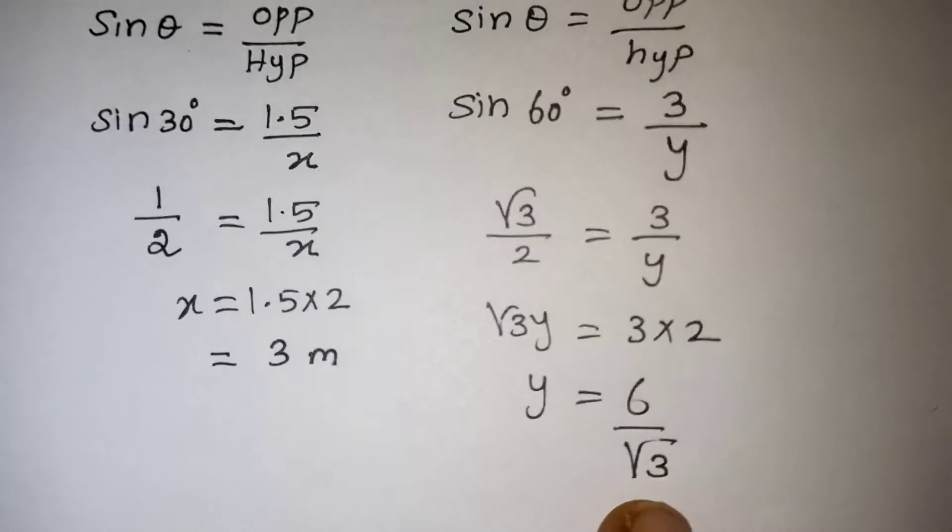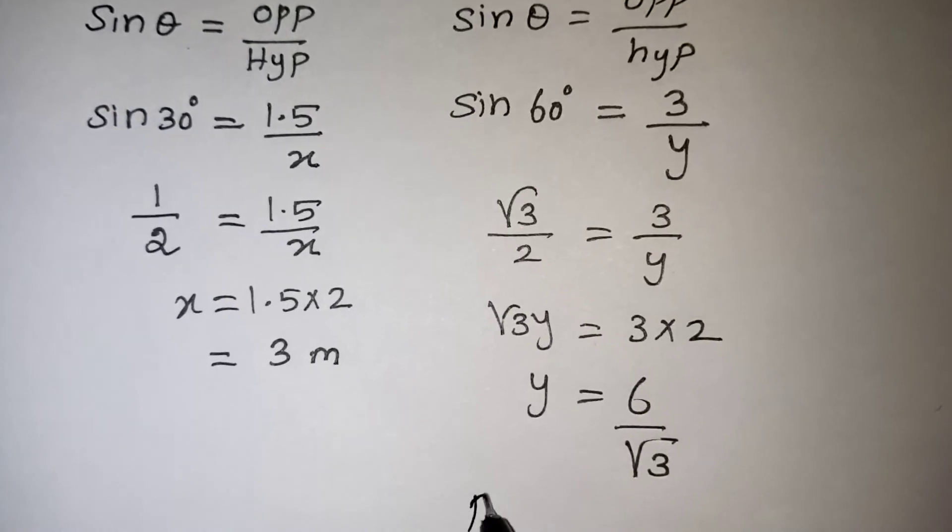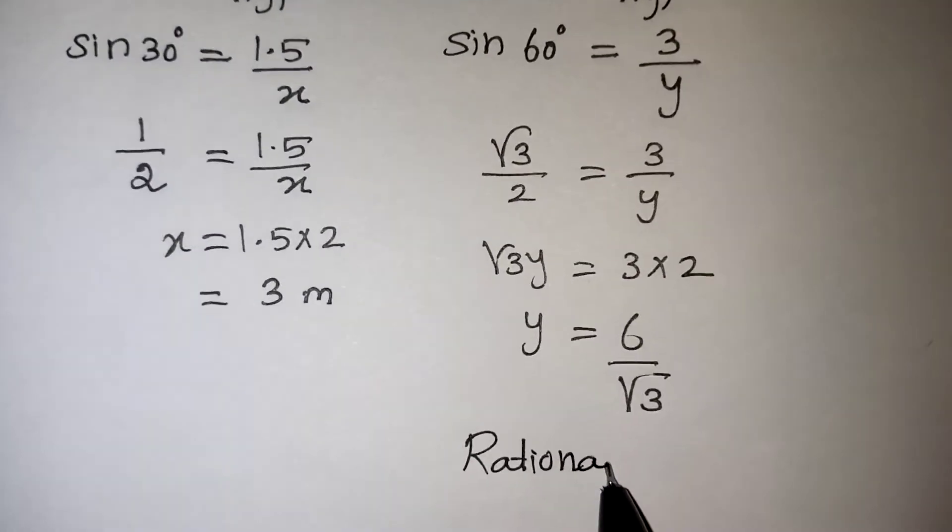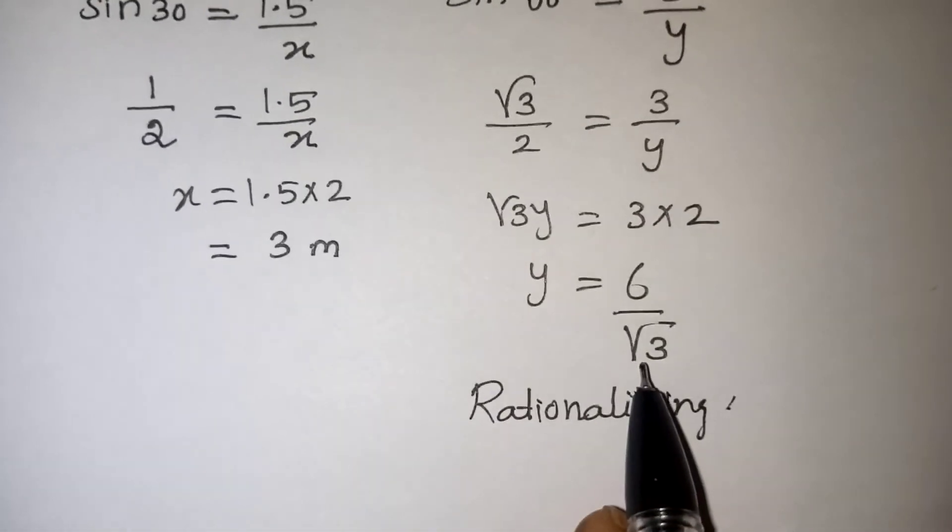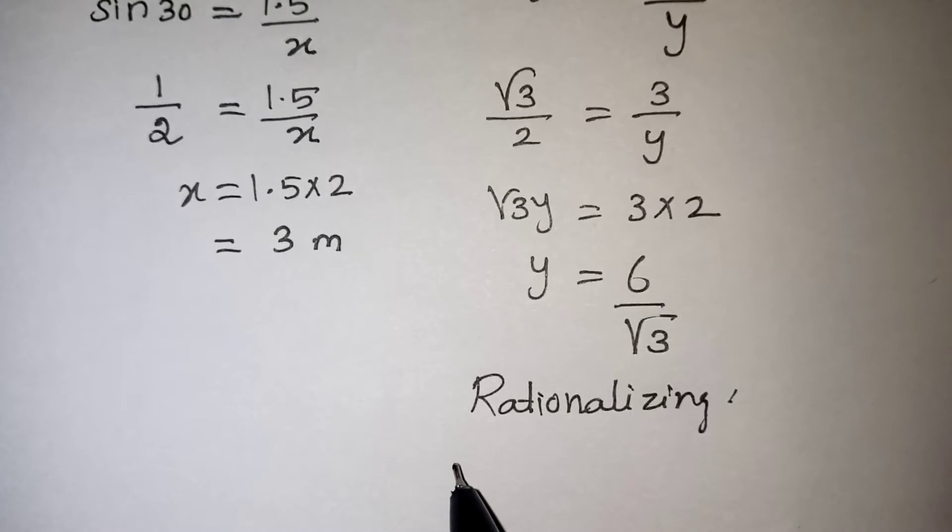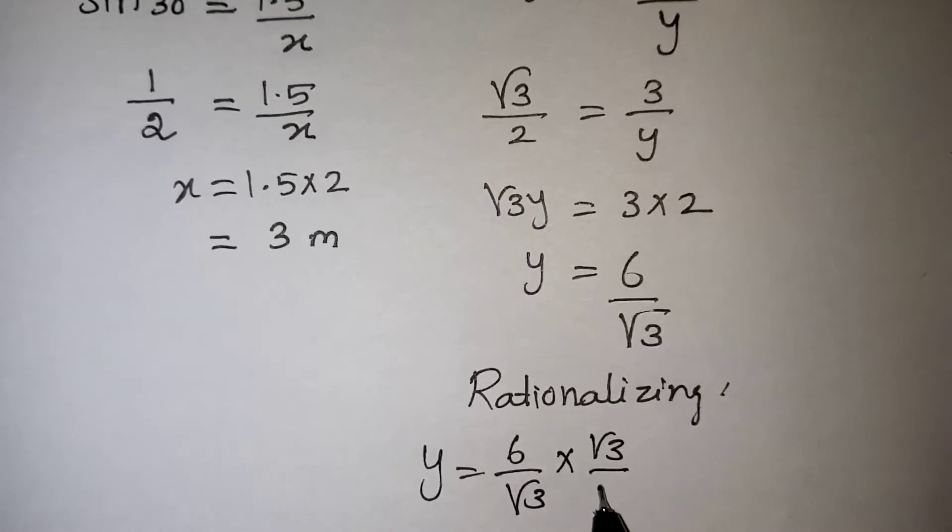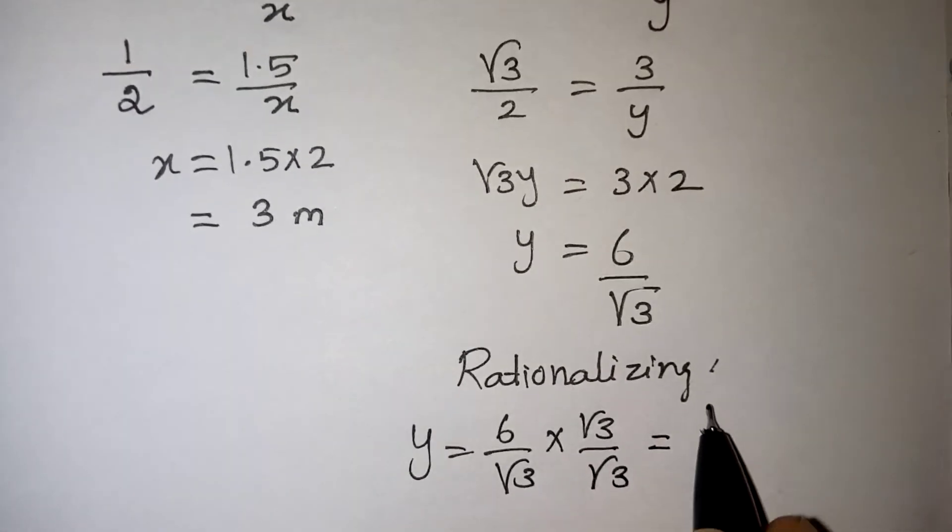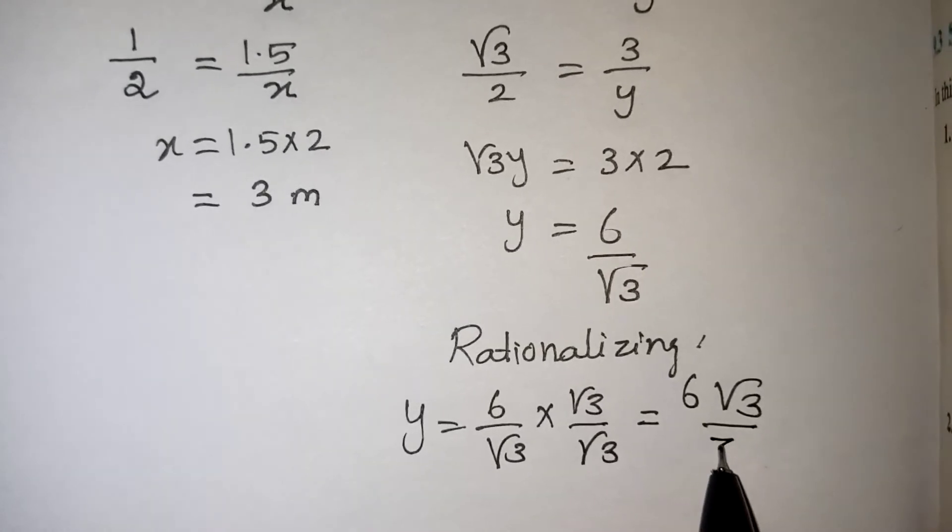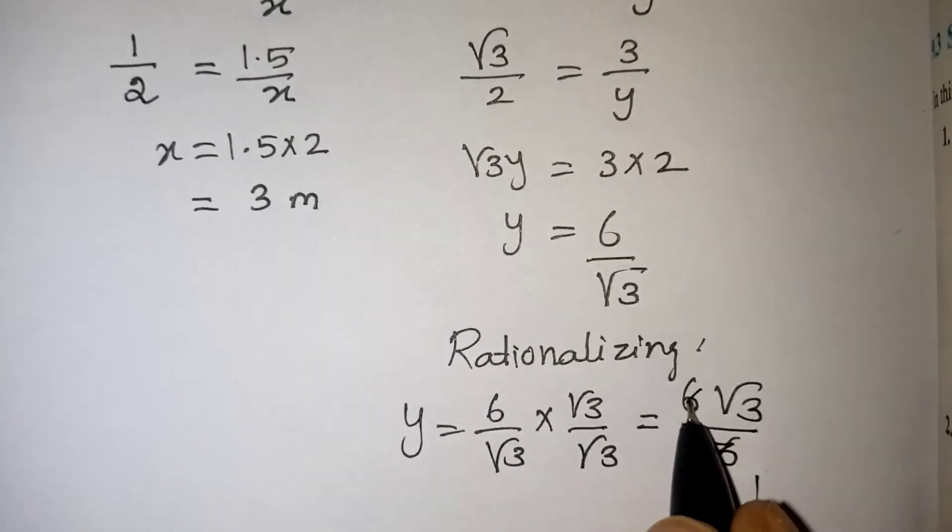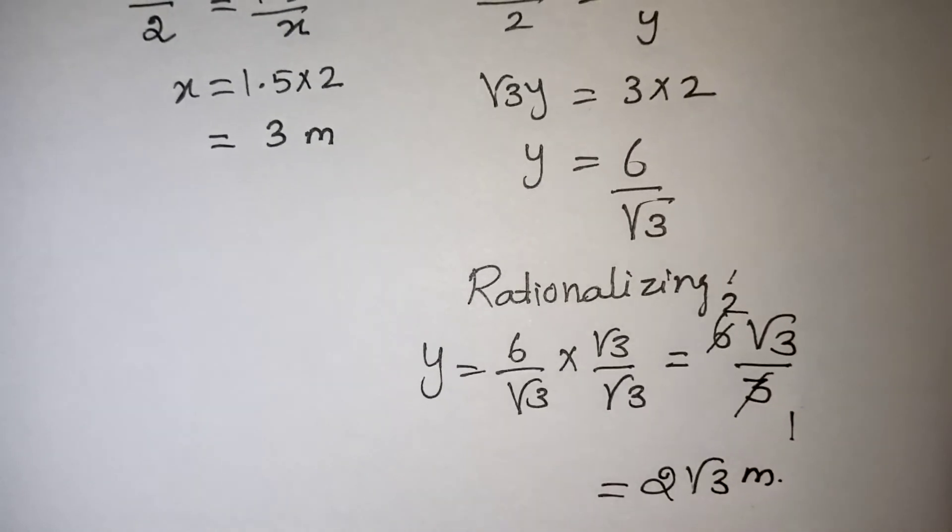The number which is not in standard form. Because in the denominator root is given. So we have to do the rationalization. Rationalization is nothing but rationalizing the denominator. Denominator root 3 is there. To make it into the normal number, we can multiple and divide by root 3. So numerator will be 6 root 3. Denominator will be root 3 into root 3 will give you 3. Now 3 ones are 3, 3 twos are 6. So our answer is 2 root 3 meters. So that is your correct answer.